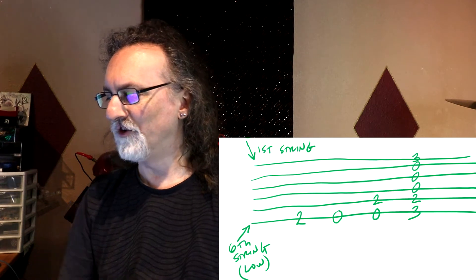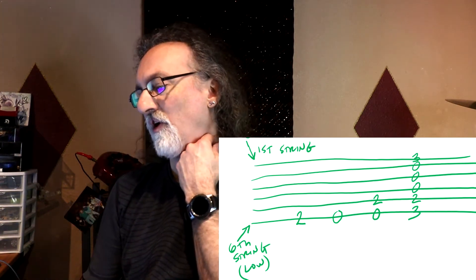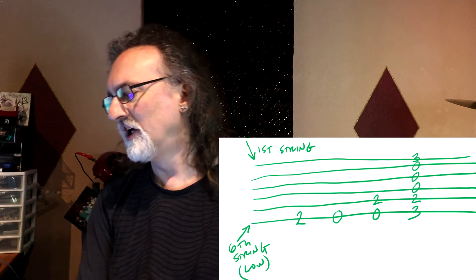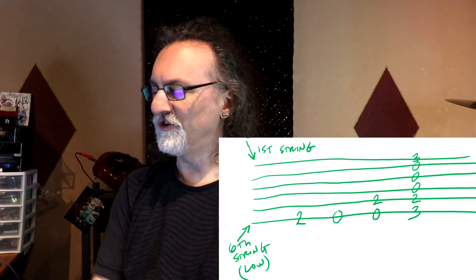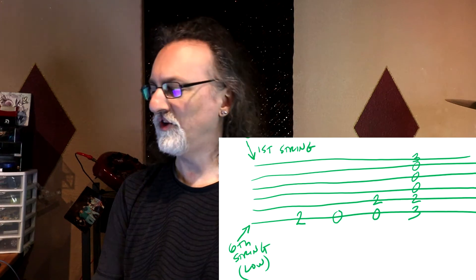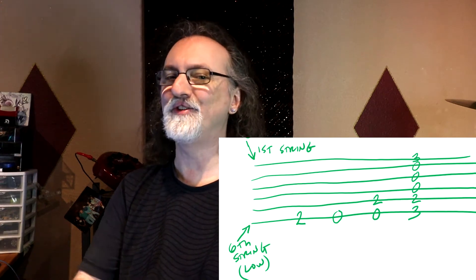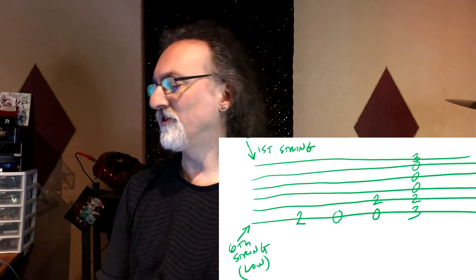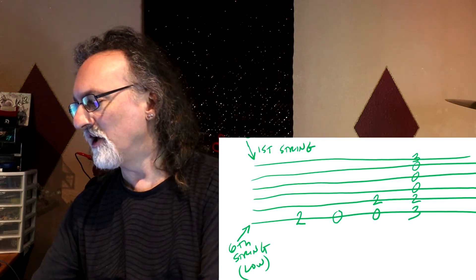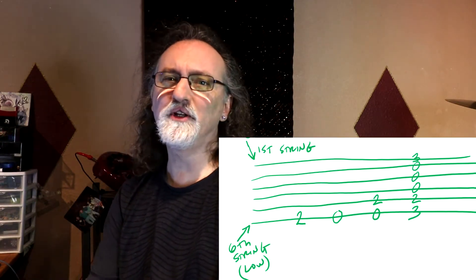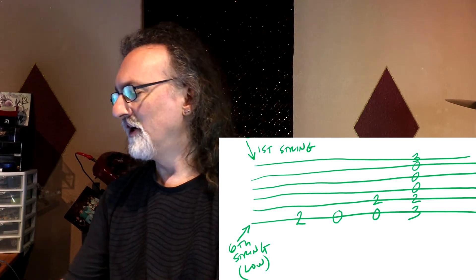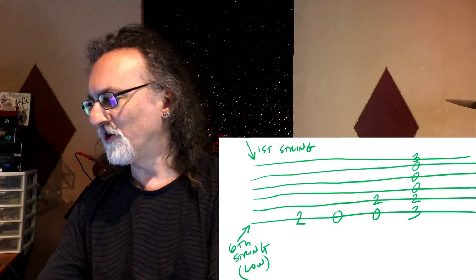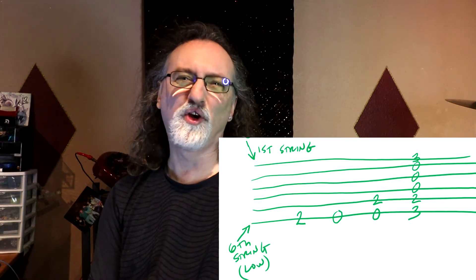The only other part of tab is you write a fret number for what fret you want to be playing. So if I write a two on the sixth string line, that means second fret on the sixth string. It doesn't tell you what finger to use, and in this basic representation it doesn't tell you anything about the timing — it just tells you to play second fret on the sixth string. If you write a zero, that means open string.